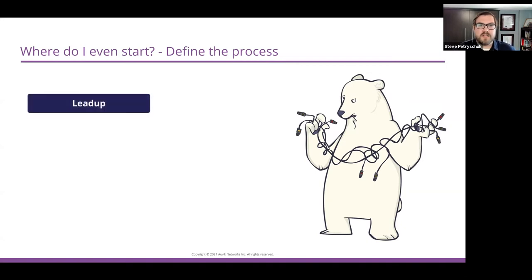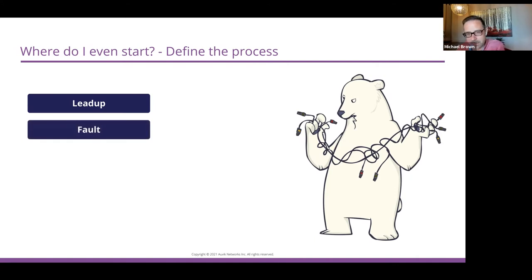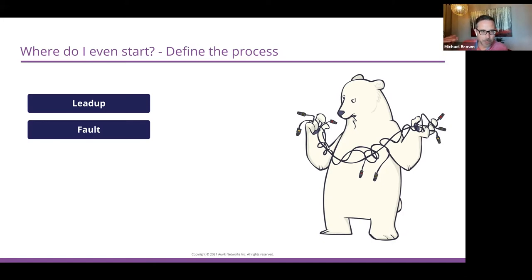The first step is the lead-up — describing at a fairly high level the sequence of events that led up to the incident. This is usually something you kind of know and you don't have to dig in too deep. You'll find that the first five or six steps are really just documenting what happened and having a written record of what people were doing at the time — and that actually informs a lot of the later more in-depth analysis. In our case, it might have been a scheduled maintenance window and at the end of it there was a customer outage. The fault is next — what went wrong. In this case, we applied a config change, we thought it would work and it didn't.